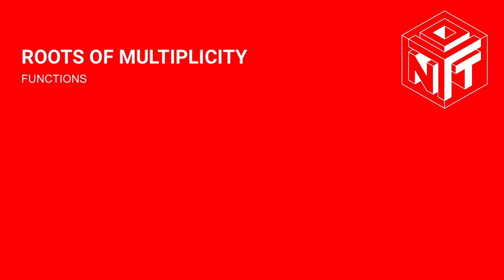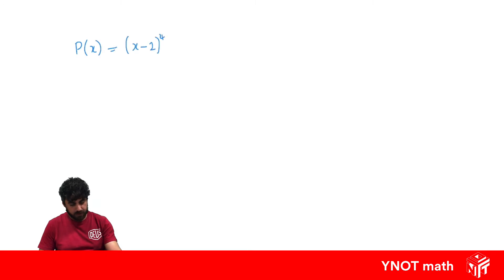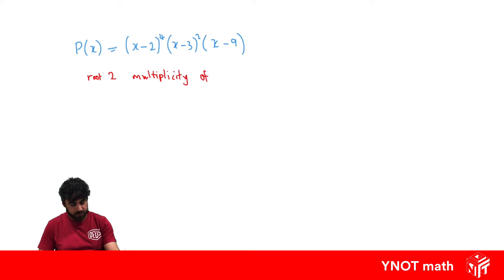Roots of Multiplicity. The best way to introduce this is by looking at an example. Let's say we have a function p(x) = (x−2)^4 · (x−3)^2 · (x−9). When we talk about roots of multiplicity, we're talking about the roots of a polynomial and what their power is. In this case, the root 2 has multiplicity 4, the root 3 has multiplicity 2, and the root 9 has multiplicity 1.